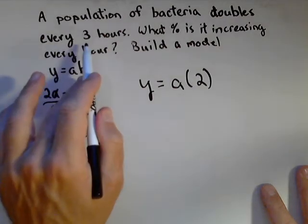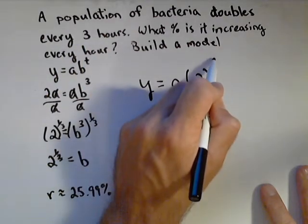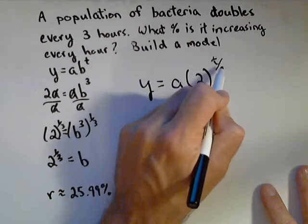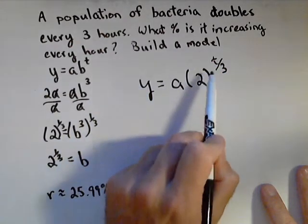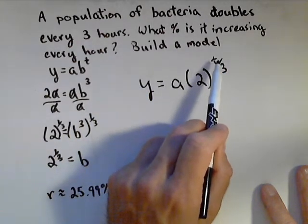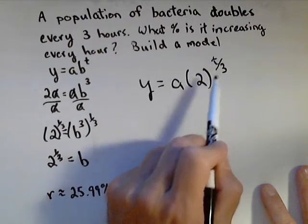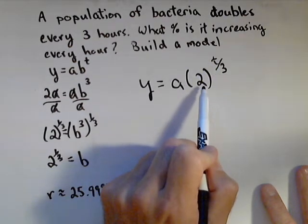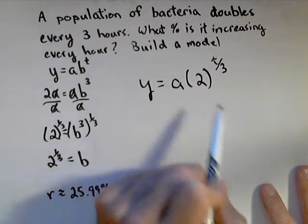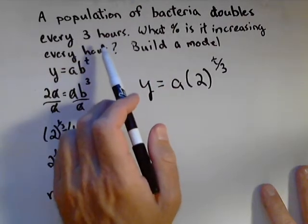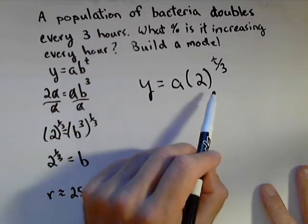And now it takes three hours to double. So what I'm gonna do is write my exponent as t over three because what that does is it basically says, okay, if I put in three here, I get an exponent of one, so it multiplies my initial by two. So now, all you need to know is your doubling time and your initial amount, and you can build a model.